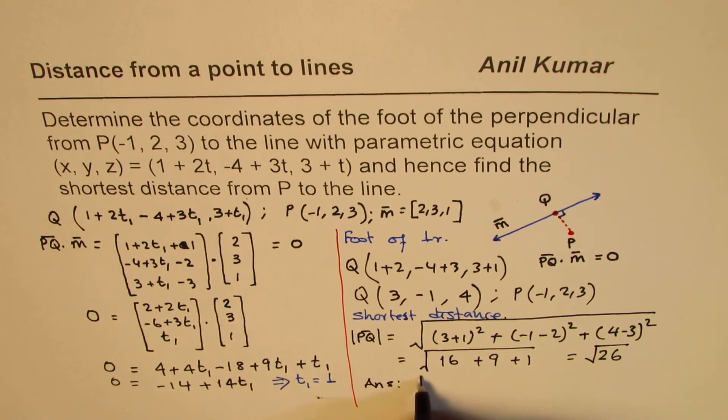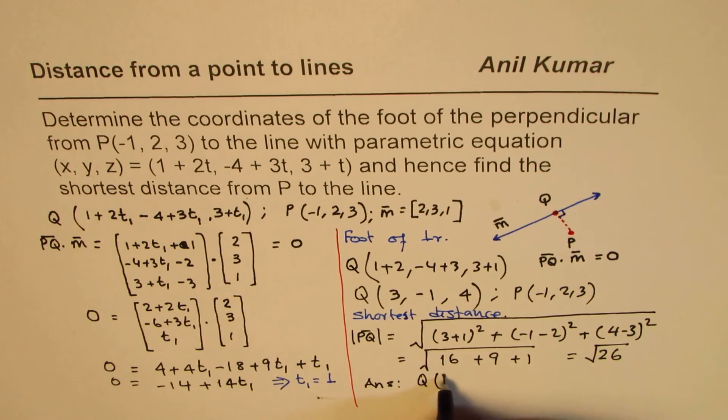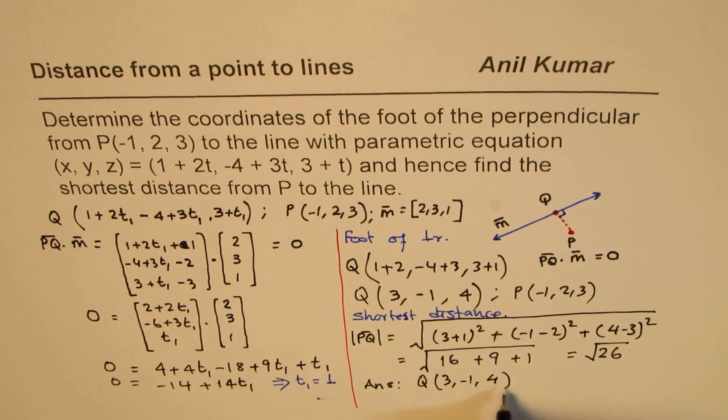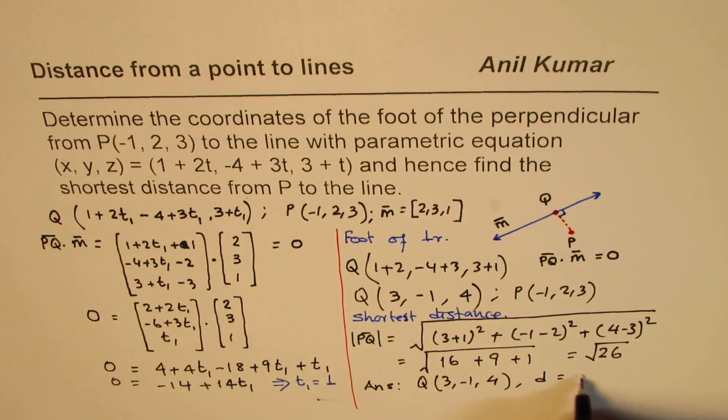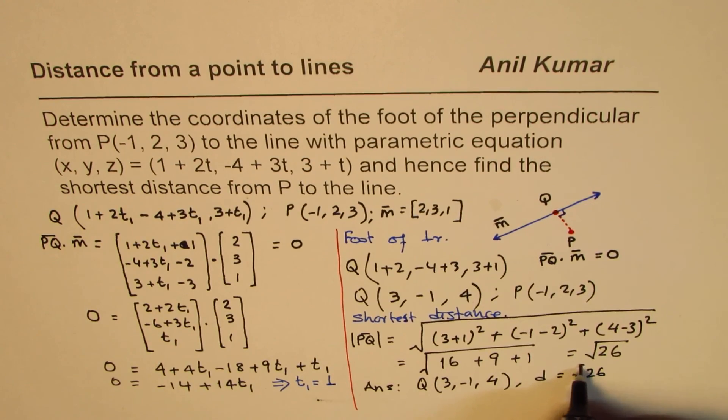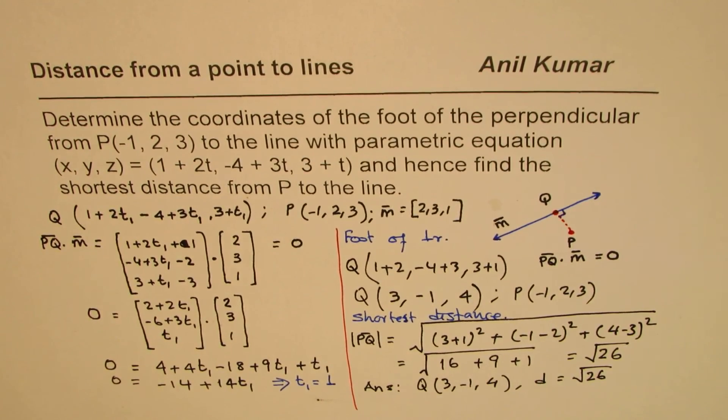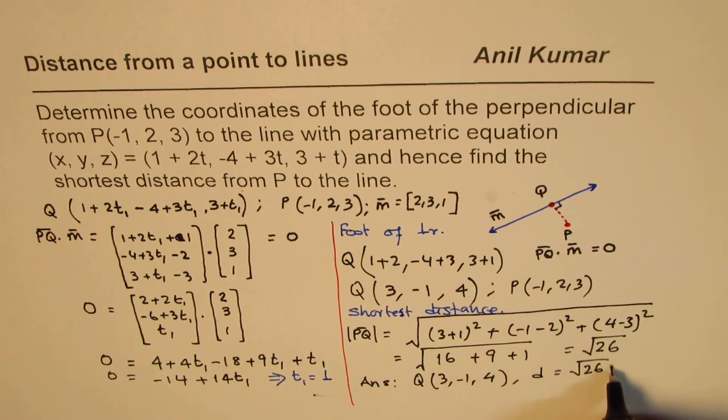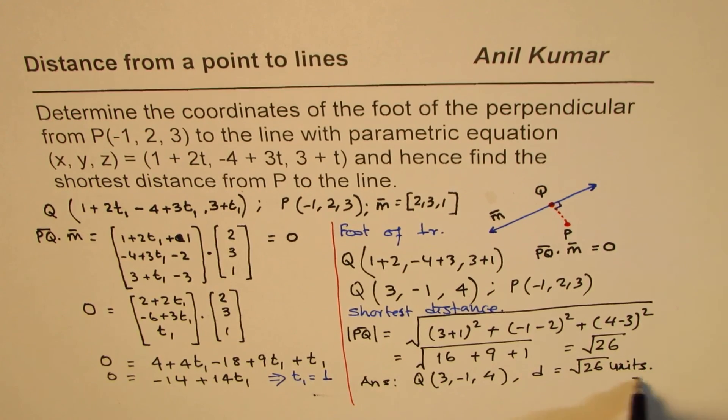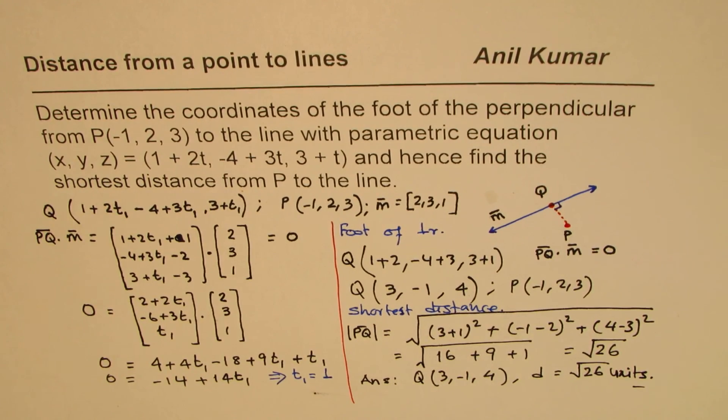So we get our answer. The answer is the foot, which is Q, is (3, -1, 4). And the distance is equal to square root of 26. So that is how you can solve the question. I'm Anil Kumar, and I hope that helps. Thank you, and all the best.